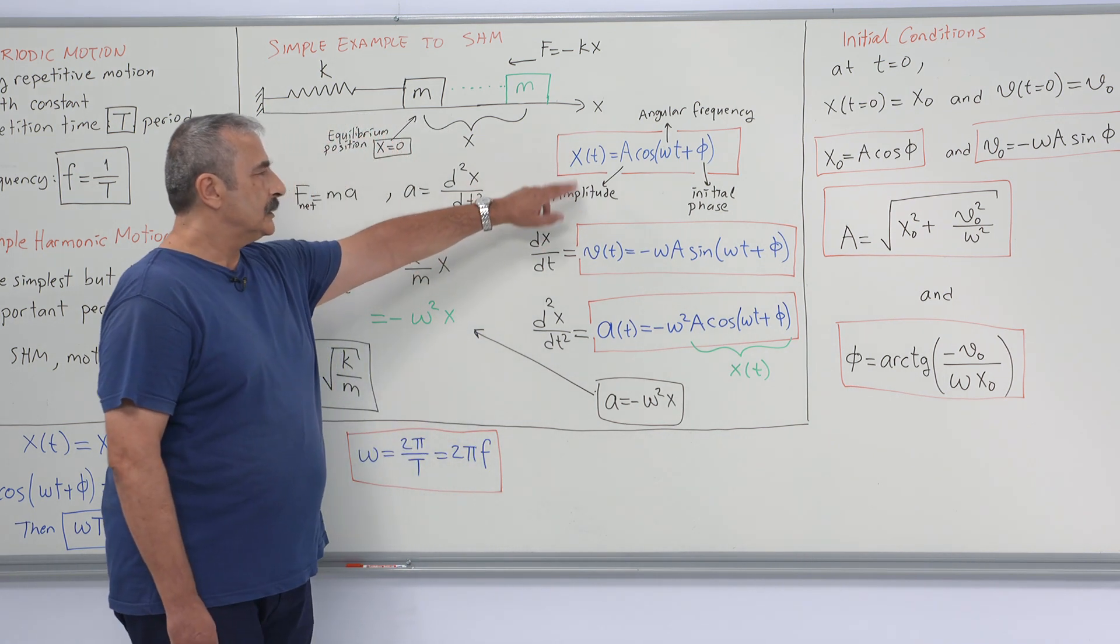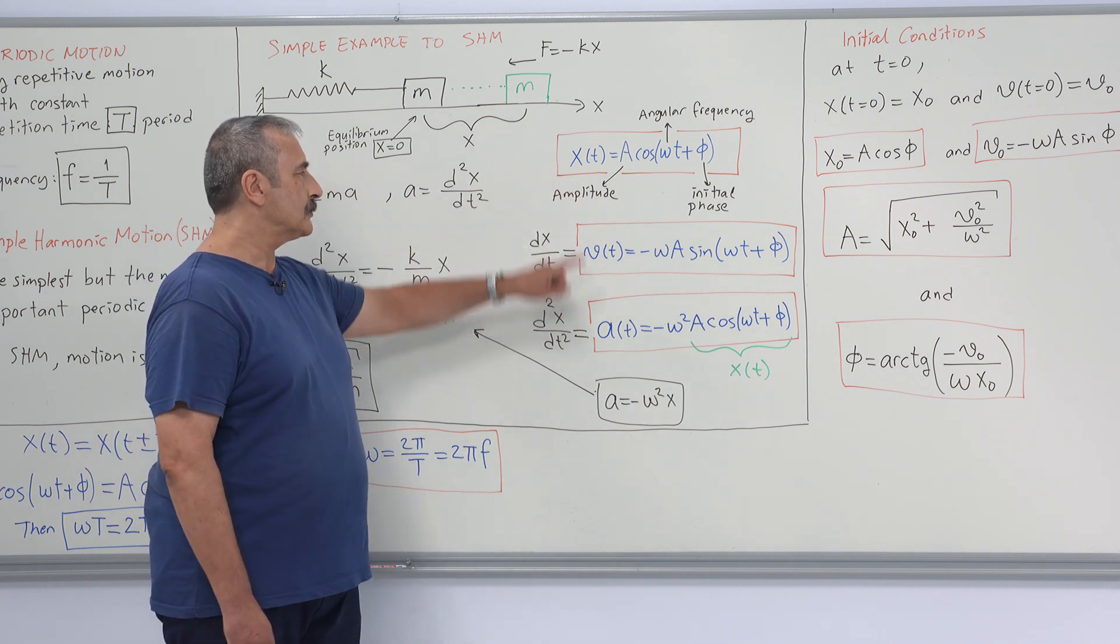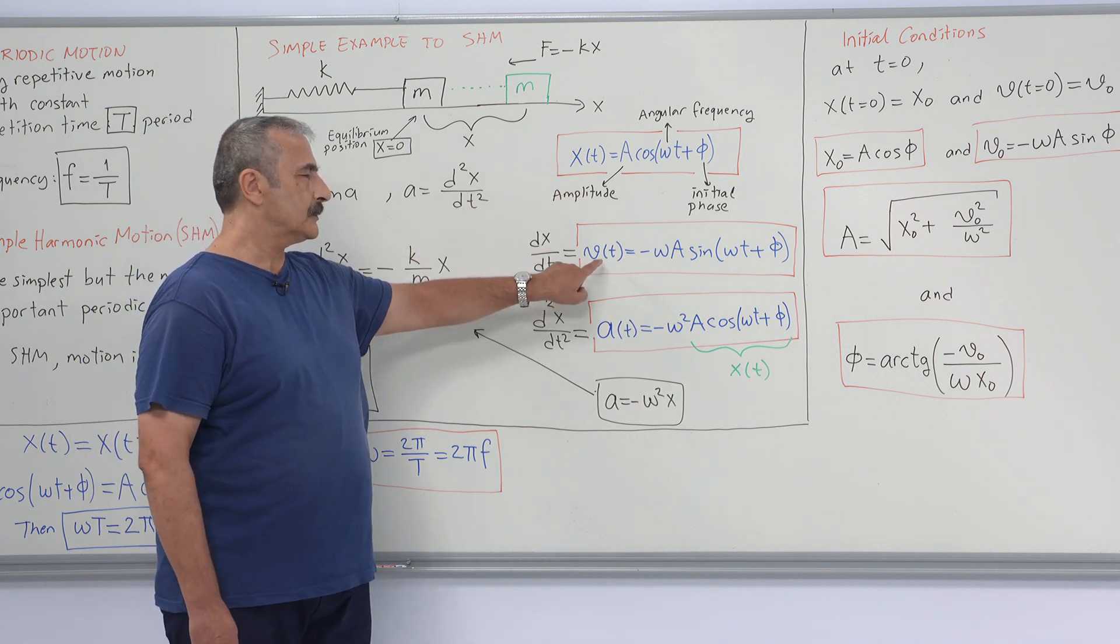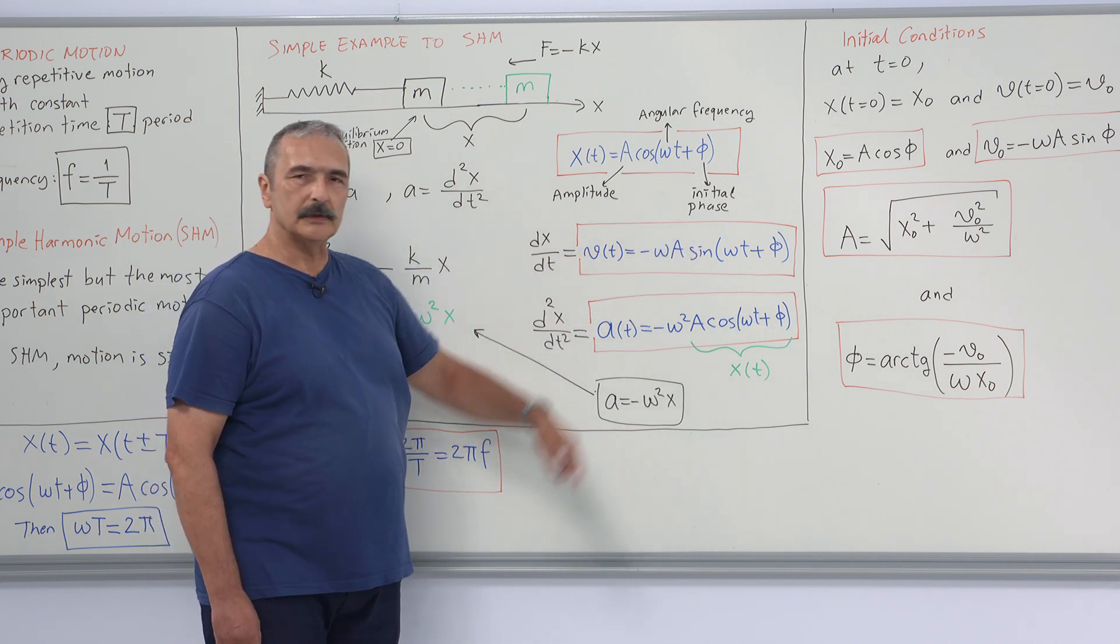I will take the derivatives of this displacement. First time derivative gives the velocity of the object, which is again sinusoidal.